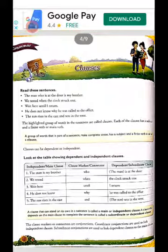A clause that can stand on its own in a sentence is called a main clause or independent clause. A clause that depends on the main clause to complete the sentence is called a subordinating clause or dependent clause.